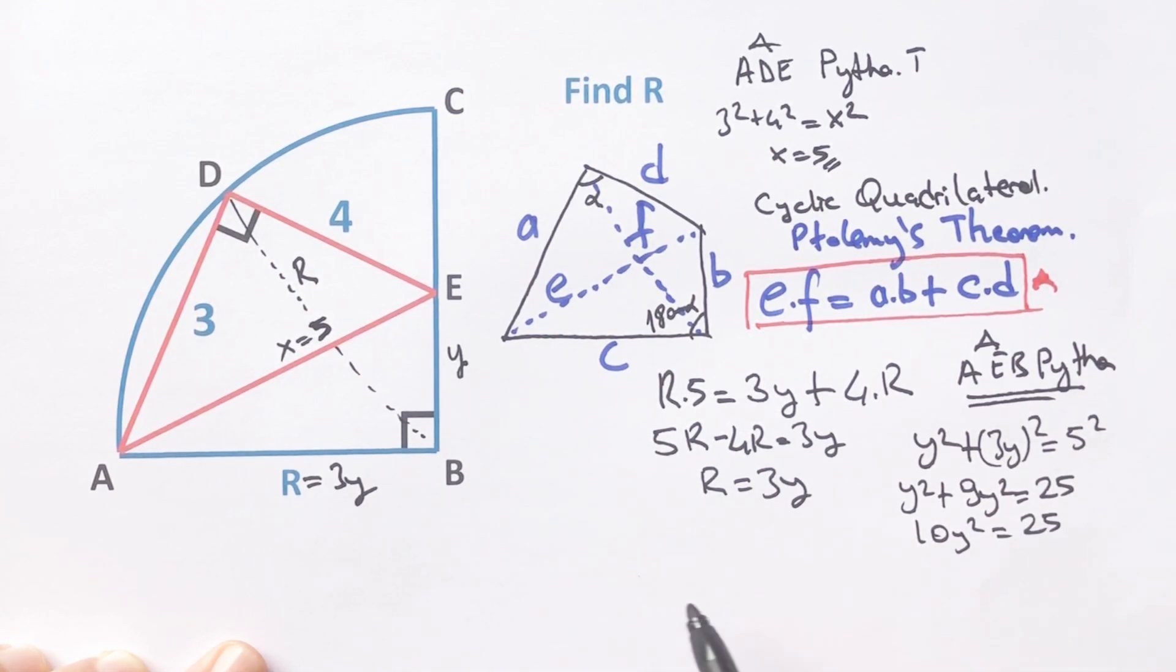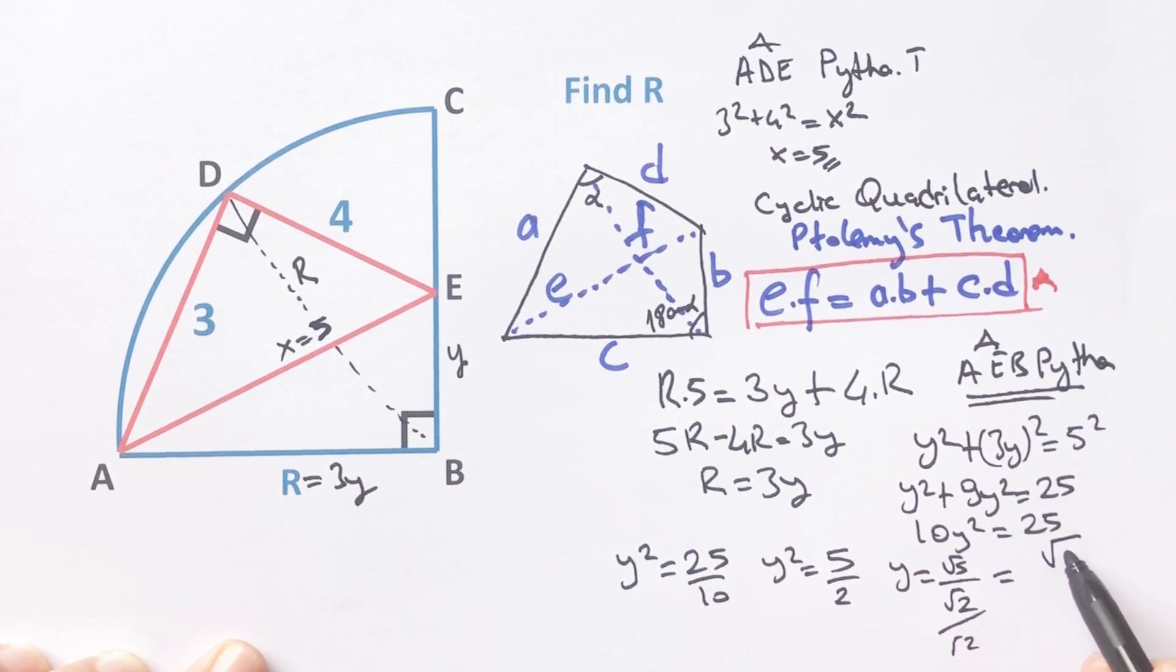So 10y squared equals 25. Therefore, y squared equals 25 over 10. y equals root 5 over root 2. If we multiply with root 2 numerator and denominator, y equals root 10 over 2.